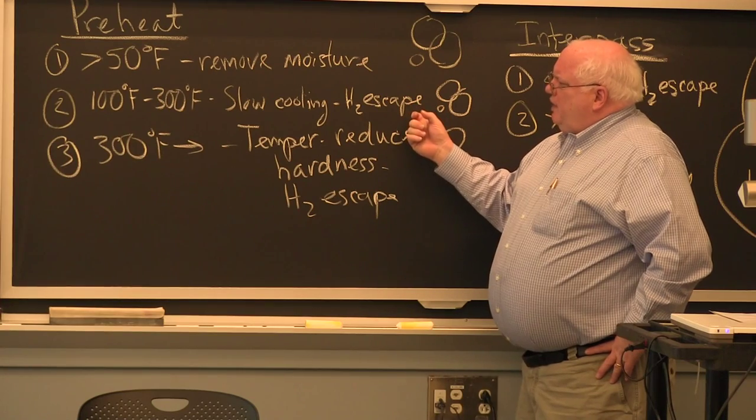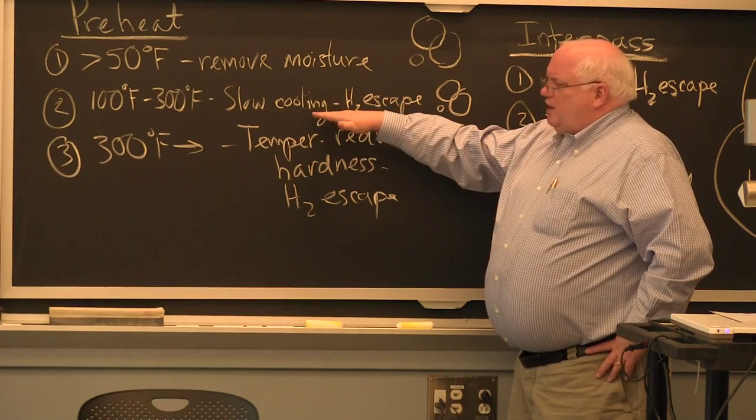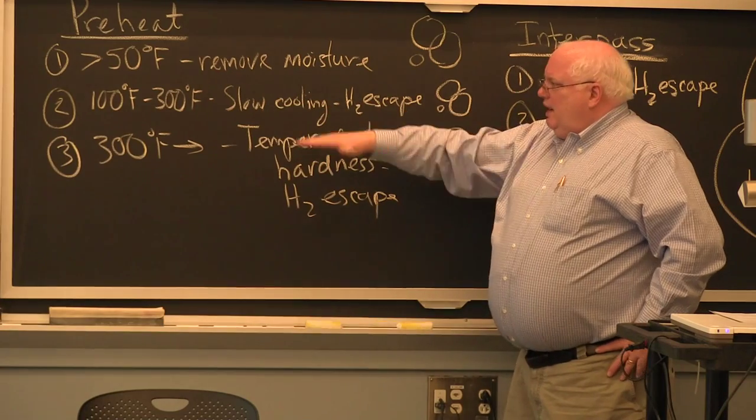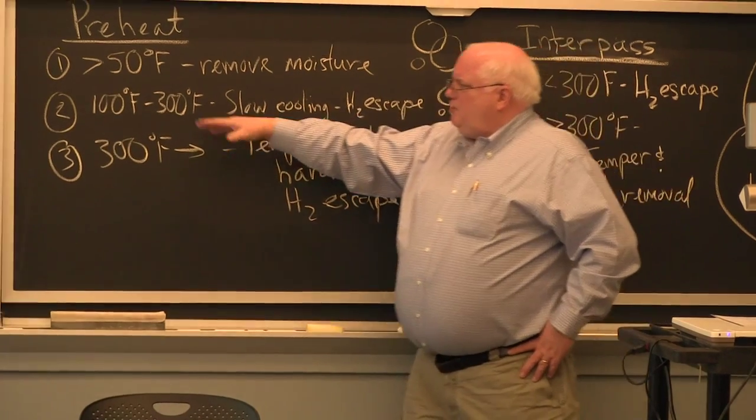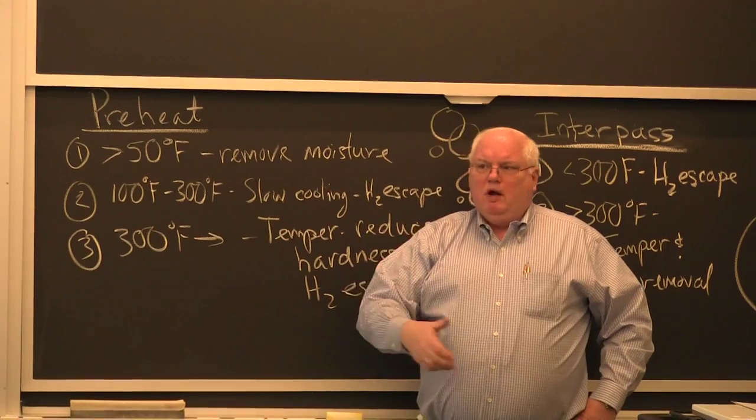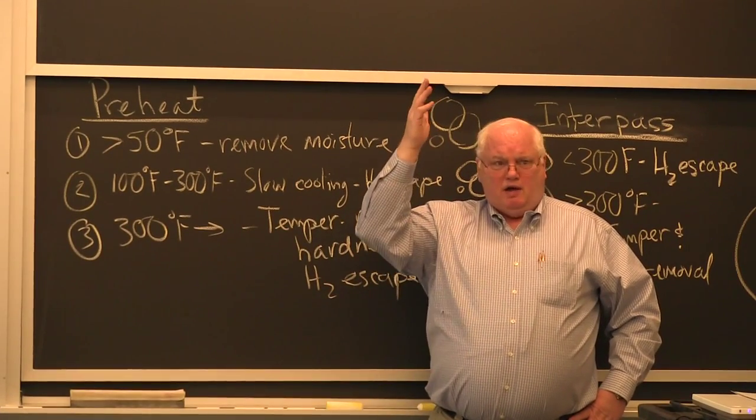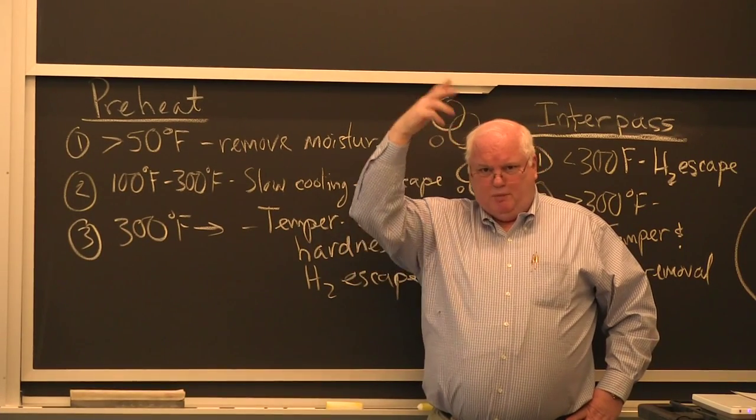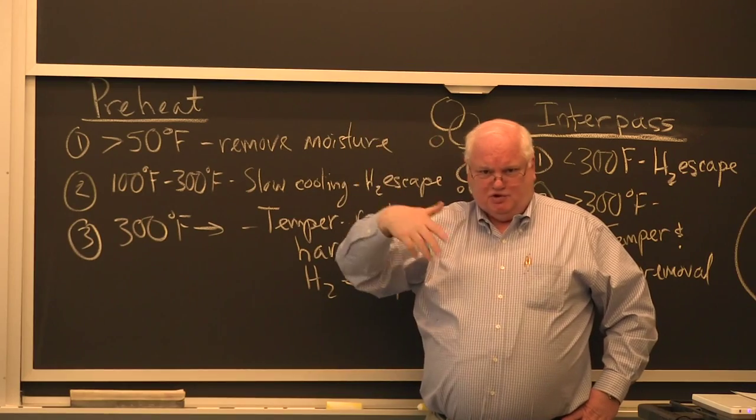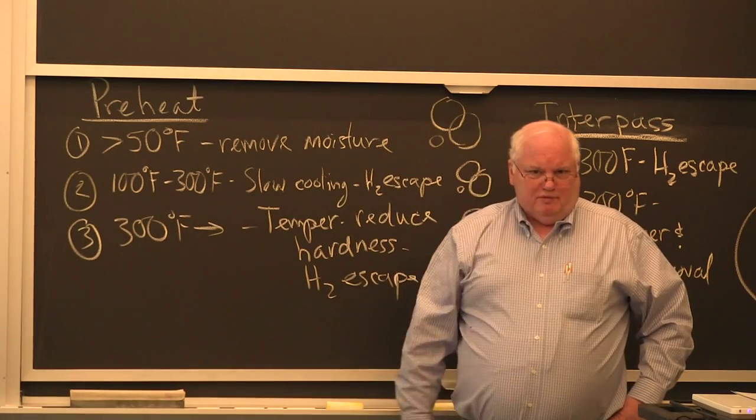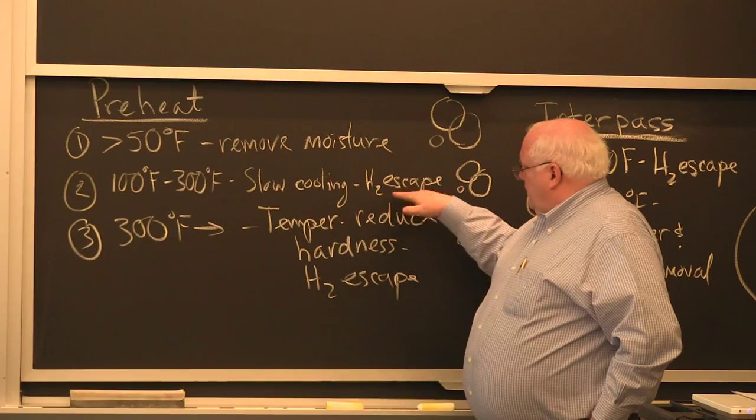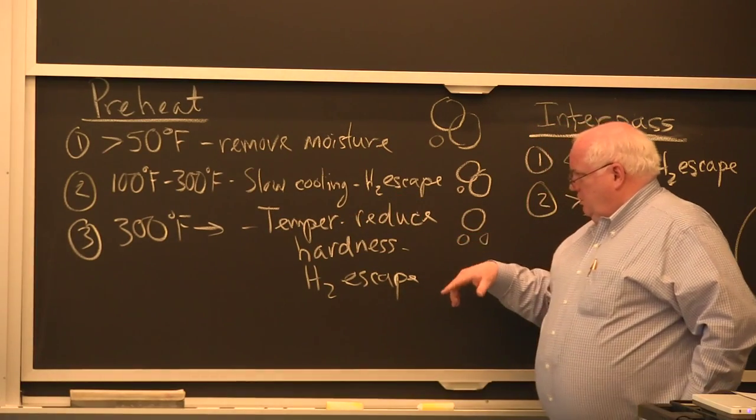Between 100 and 300 degrees F typically we're just trying to slow down the cooling and keep the thing in this range because we know that'll accelerate the evolution of the bubbles of hydrogen coming out of the surface. I showed you the glycerin example and you just speed that up, it allows the hydrogen to escape.